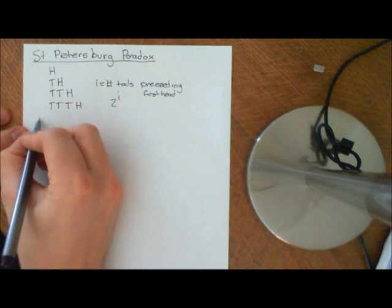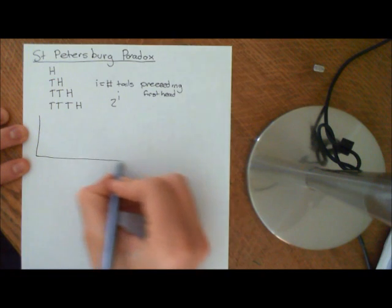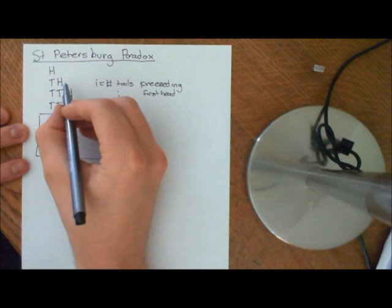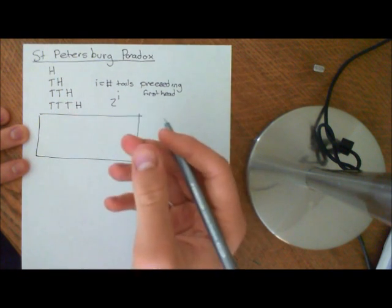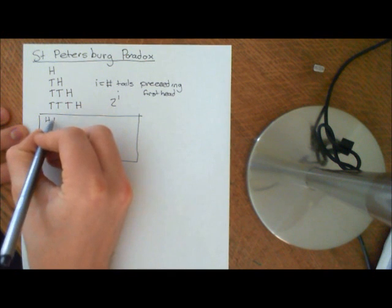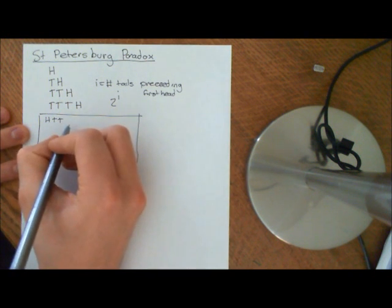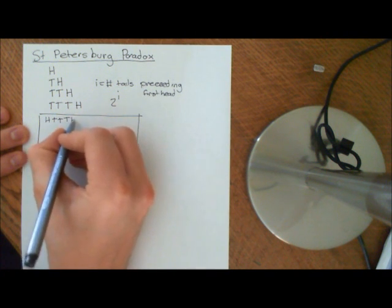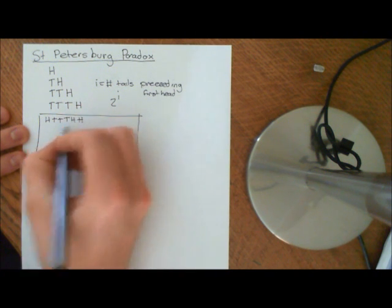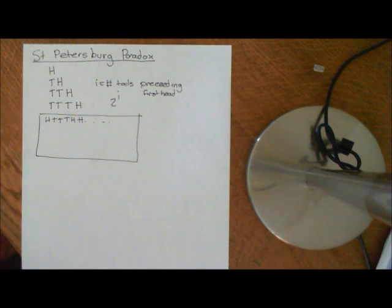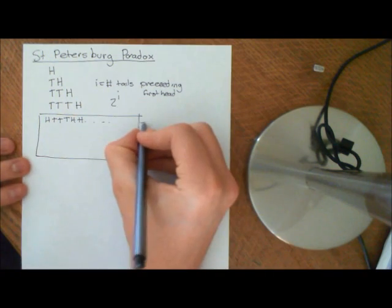The way of doing this problem is to imagine we have a probability space. Now, even though the game ends at heads, we're going to imagine that we flip the coin countably infinitely many times. So even if you begin with a head, you still keep throwing it — you're going to win absolutely nothing because the game ended as soon as you got a head, but you go on anyway. So you put in every possible outcome of flipping a coin countably infinitely many times into this sample space.